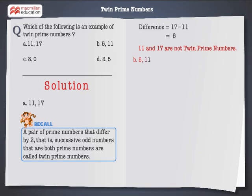Next, 5 and 11. Here the difference between 5 and 11 is 6. Therefore 5 and 11 are not twin prime numbers.